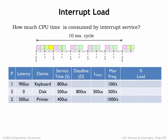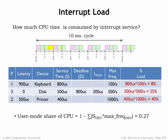There are several calculations we need to do when thinking about recurring interrupts. First, consider how much load each periodic request places on the system. There is one keyboard request every 10ms, and servicing each request takes 800 microseconds, which consumes 800 microseconds divided by 10ms — or 8% of the CPU. Similarly, servicing the disk takes 25% of the CPU and servicing the printer takes 40% of the CPU. Collectively, servicing all the devices takes 73% of the CPU cycles, leaving 27% for running user-mode programs.